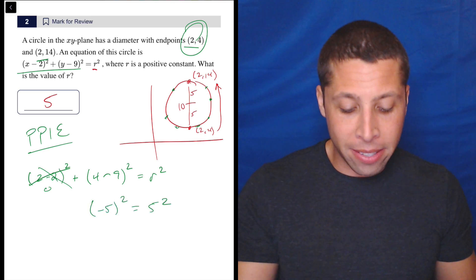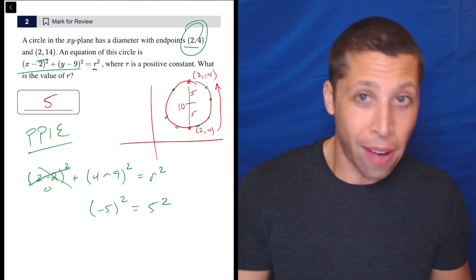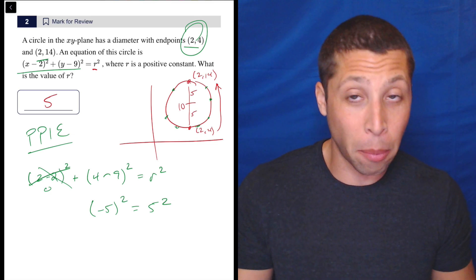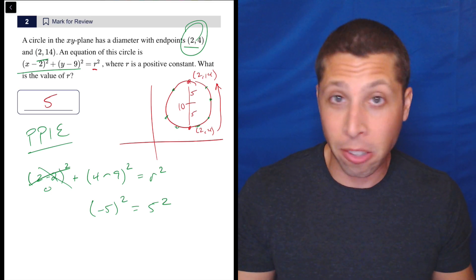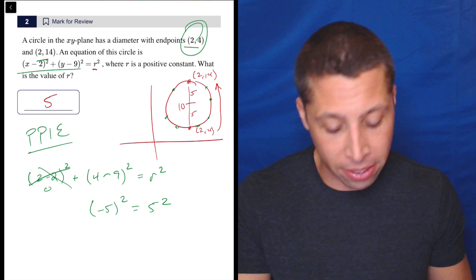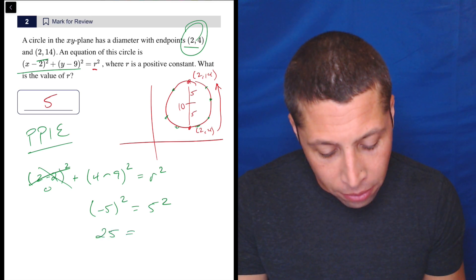Now, some of you might be tempted at that point to put in negative 5 as your answer. But remember, we can't have a negative radius. That doesn't make any sense. It has to be a positive number. It's a distance.